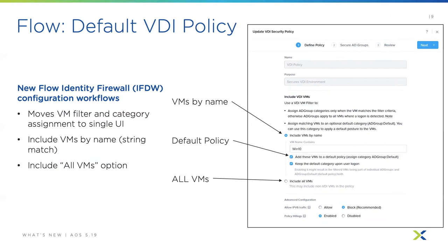There are also enhancements to Flow, including the default VDI policy. This gives you the ability to use user identity groups and segment VDI desktops with micro-segmentation from Nutanix Flow. This also allows security policies to be dynamically mapped to users and simplifies the creation of policies. With the new Flow identity firewall configuration workflow, we've moved the VM filter and category assignment to a single UI, including VM by name stream-and-match and an 'all VMs' option.